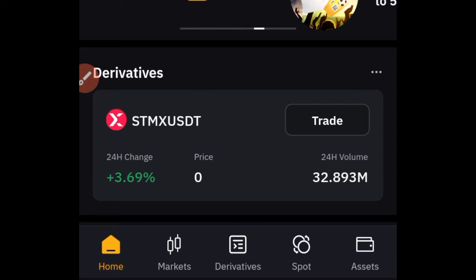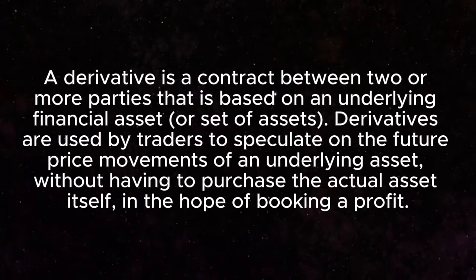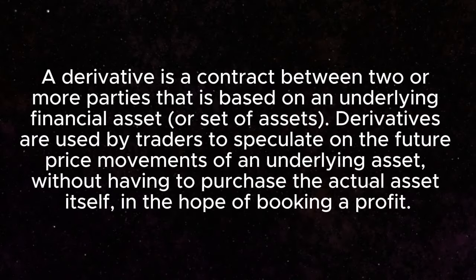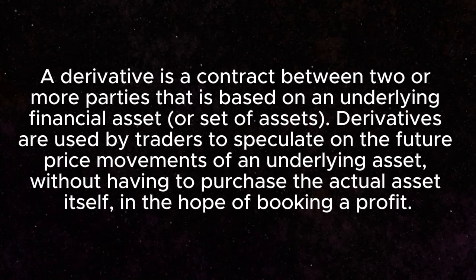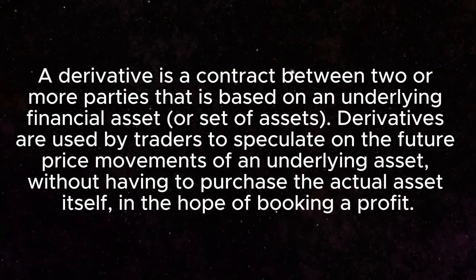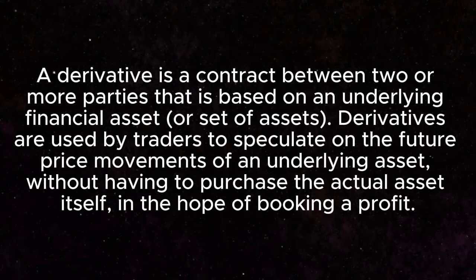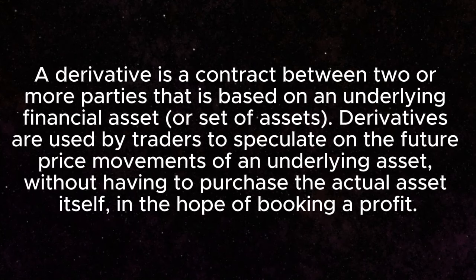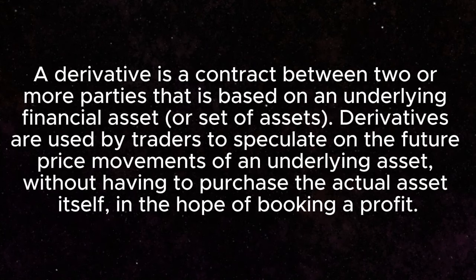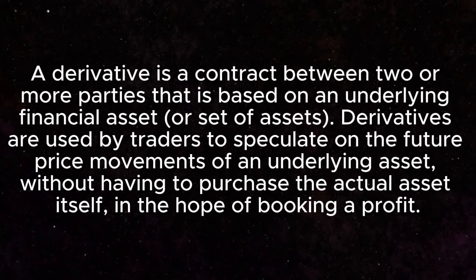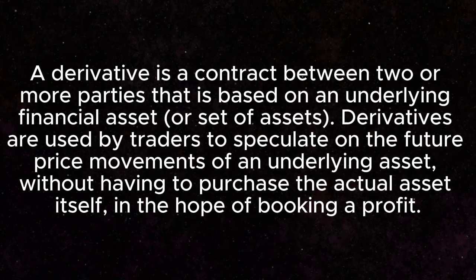On Bybit we do derivatives. What is derivatives? Derivatives is a contract between two or more parties that is based on an underlying financial asset. What that simply means is that if I want to trade Bitcoin, I don't need to own Bitcoin to trade it. Whether it's Ethereum, Dogecoin, or any crypto asset, I don't need to own them — I just need USDT, USDC, or any supported stablecoin.